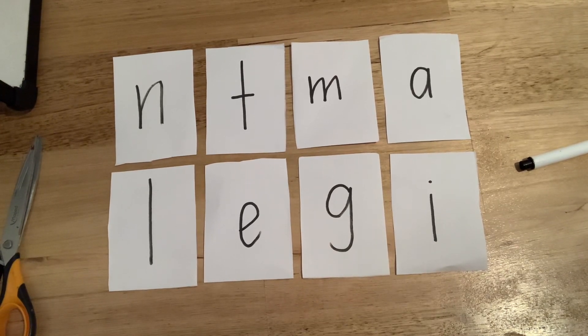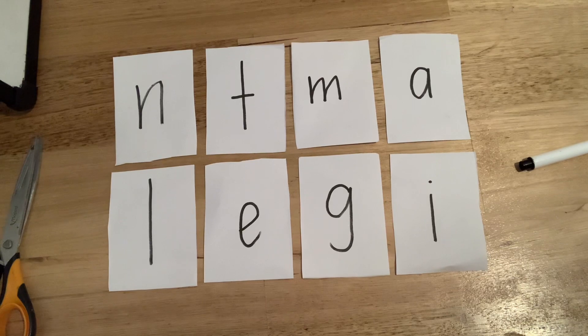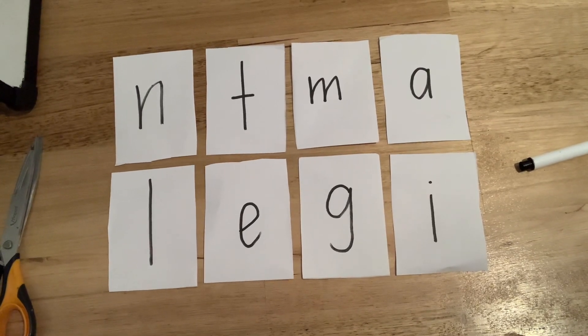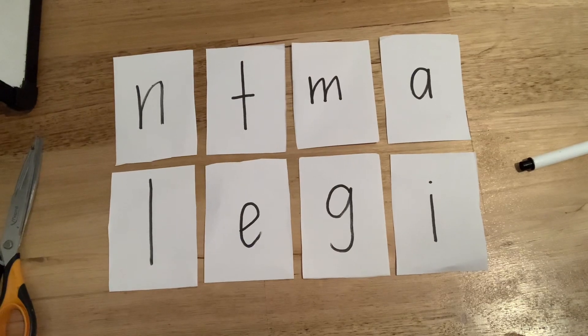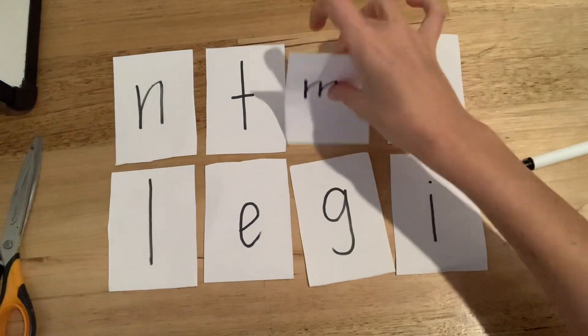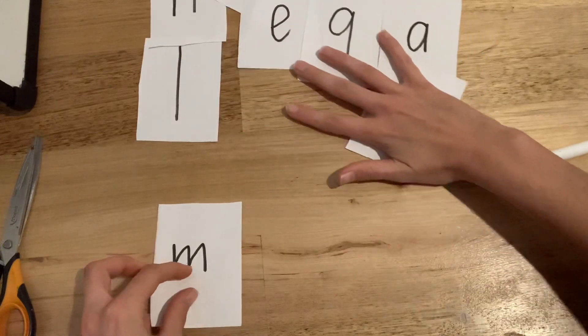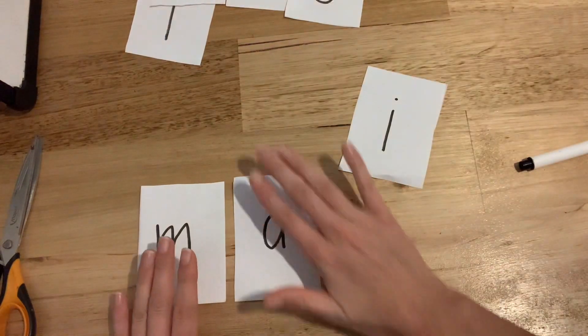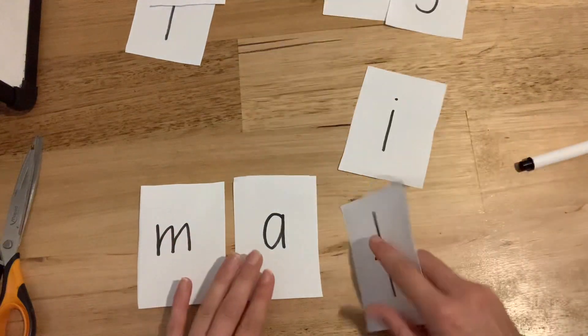Now I'm going to manipulate the sounds. That means move them around to make some words. So my first word I think I'm going to make, let me see. Start with a M. Just move it out of the way. M, A, T.